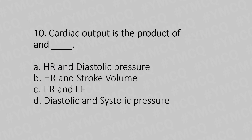Tenth question: Cardiac output is a product of — Option A: heart rate and end diastolic volume. Option B: heart rate and stroke volume. Option C: heart rate and ejection fraction. Option D: diastolic and systolic pressure. The answer is Option B, heart rate and stroke volume.